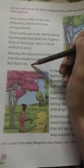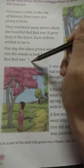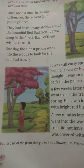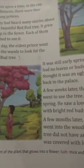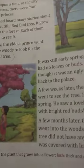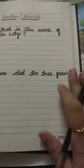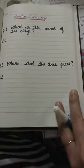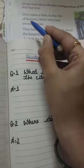After that, I have written some questions. The first question is: 'What is the name of the city?' — yani, joh city thi, us city ka kya naam tha? So, have you seen this? We read the first line: 'Once upon a time in the city of Banaras.' So what was the name of that city? Banaras.